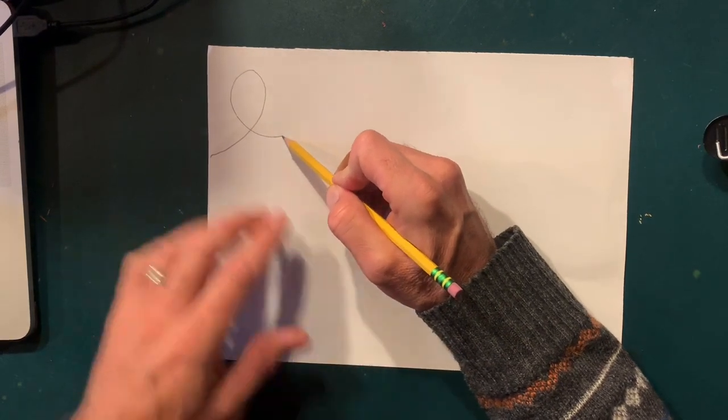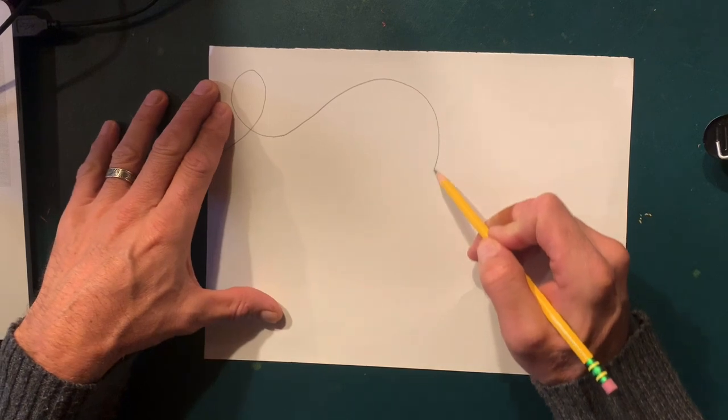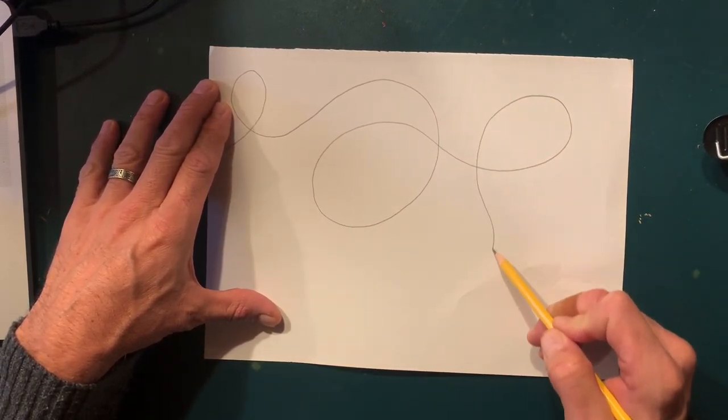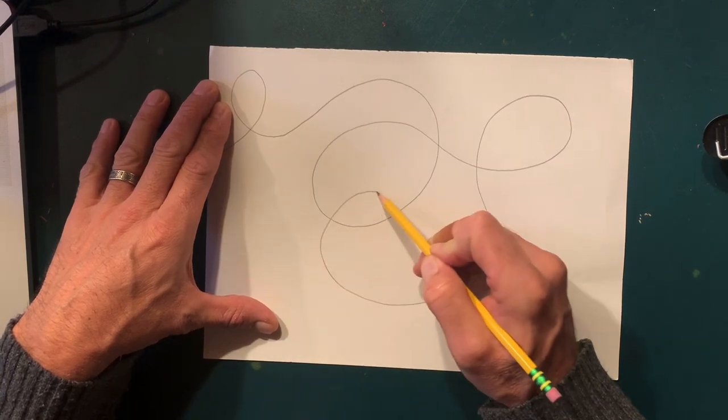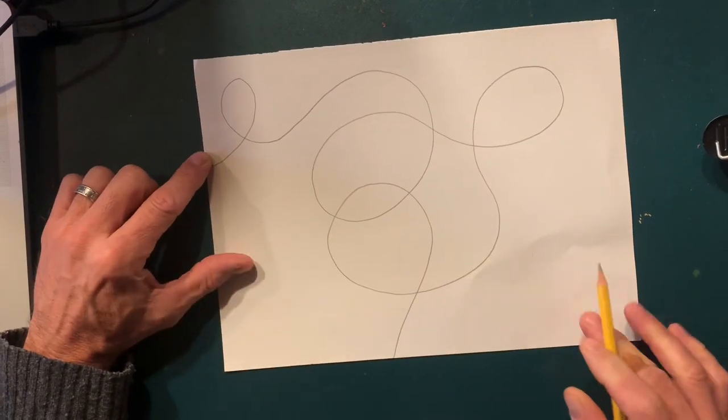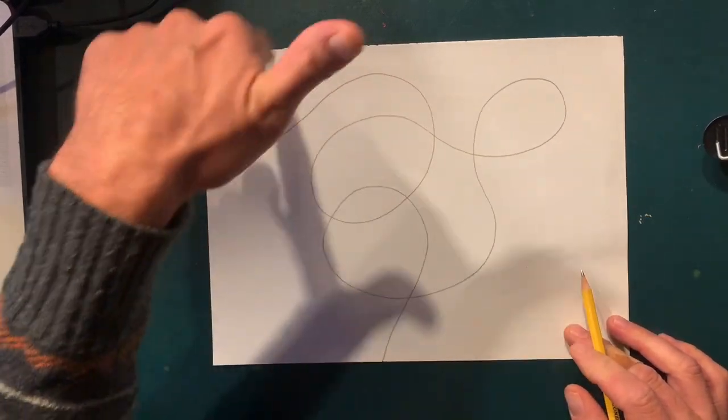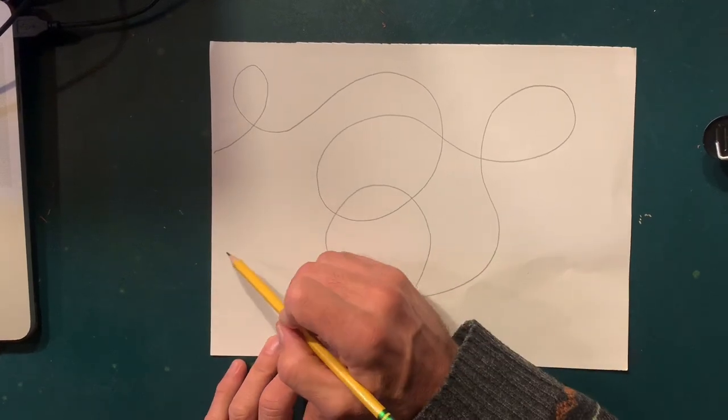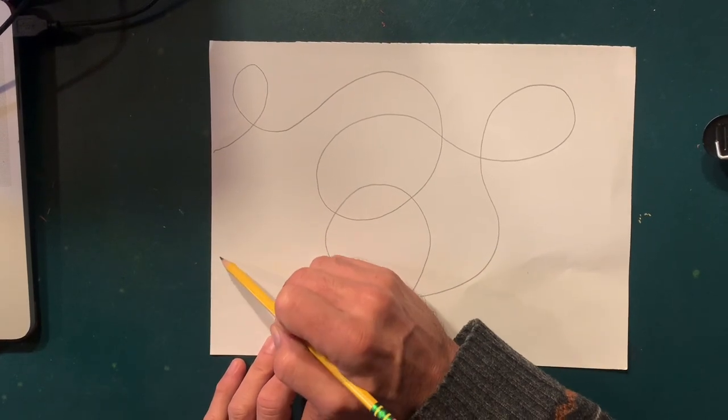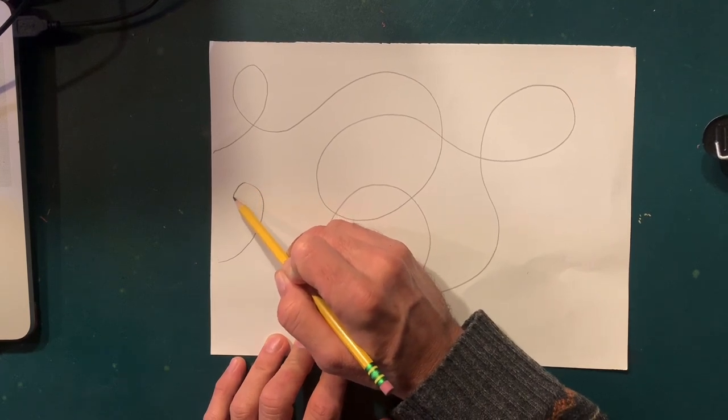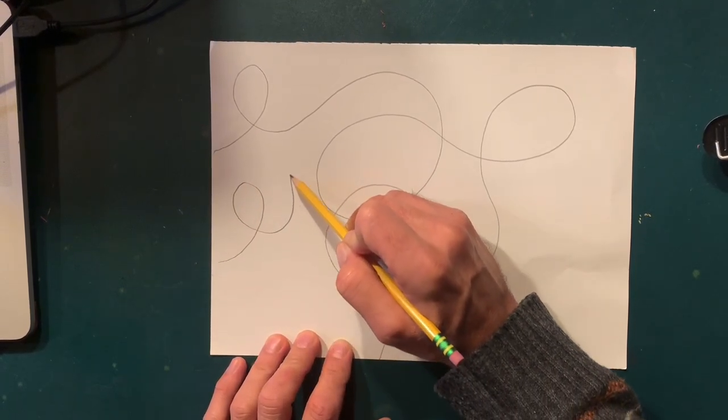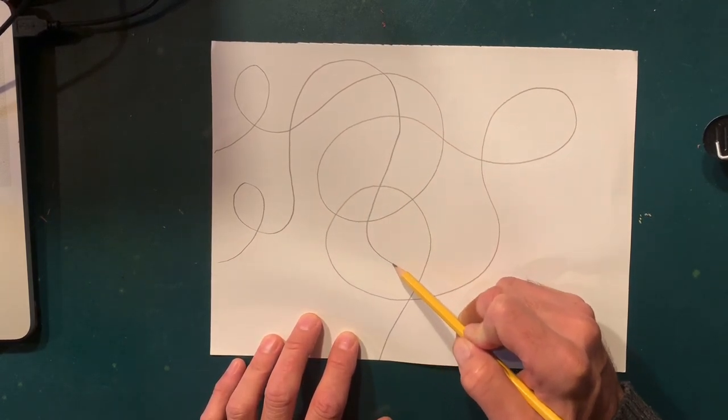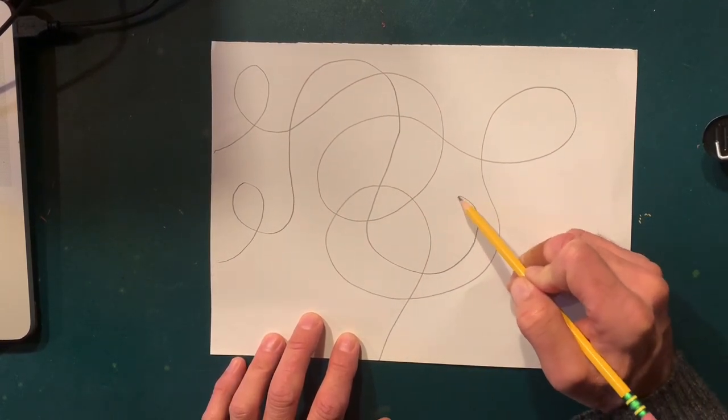Just like in the video and just like we talked about, I'm going to draw a meandering, wandering, curvy line that crosses over itself several times. At some point it goes off the paper, so I start on one side of the paper, I wind around, I crisscross over, and I go off another side of the paper. I'm going to add another one.